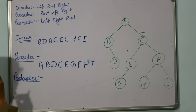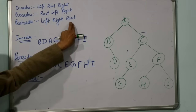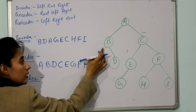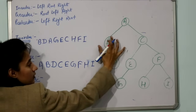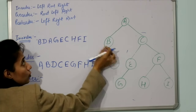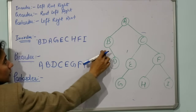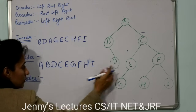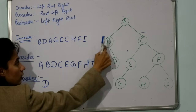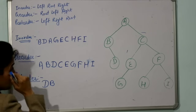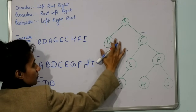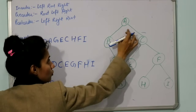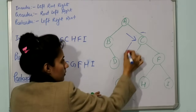Now post-order traversal. Post-order means left, then right, then root — root is printed last. Starting from A, we don't print it first. Go to the left part. For B (root of subtree), we don't print B first either. Go to B's left — nothing. Then go to B's right — D is there, print D. Then print root B. So left part gives us D, B.